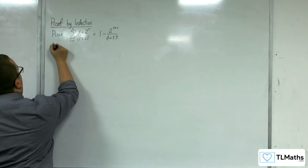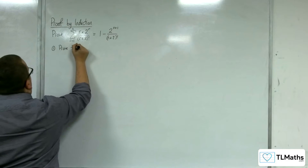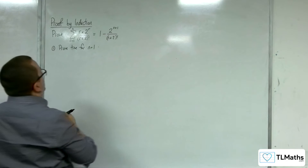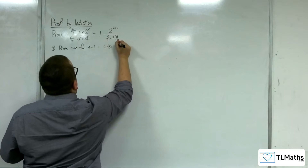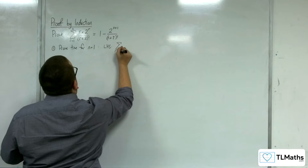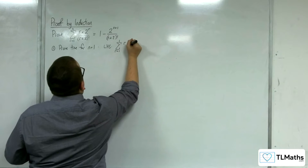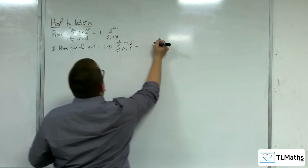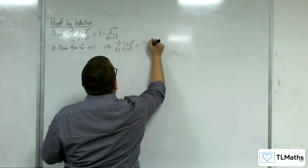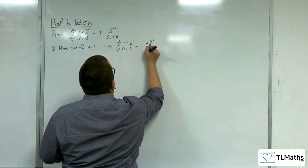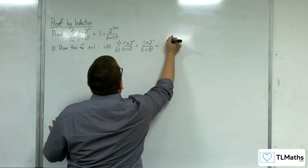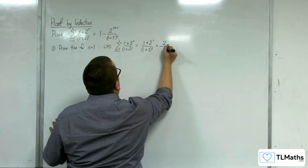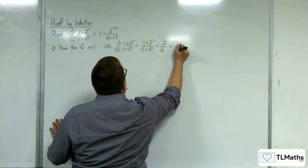Step 1: prove that it's true for n equals 1. The left-hand side, the sum from r equals 1 to 1 of r times 2 to the r over (r plus 2) factorial, is equal to 1 times 2 to the 1 over (1 plus 2) factorial. The numerator is just 2, the denominator is 3 factorial, which is 6, and so that is 1 third.